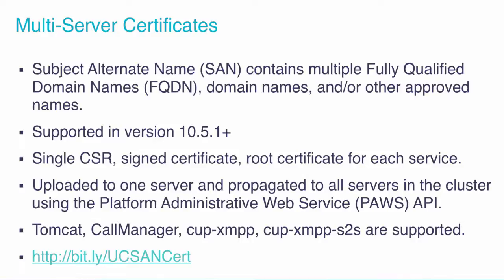SAN certificates have been around for a while, but they're now supported in 10.5.1 and above in a UC cluster. What that means is you have one single CSR with multiple FQDNs in it, you have it signed, and then you take the root certificate and the signed CSR and upload them per service on one server. The Tomcat service certificate, for example, will be propagated out to each server in the cluster — every subscriber and every IM and Presence server — using the Platform Administrative Web Service API, which runs on Communications Manager by default.